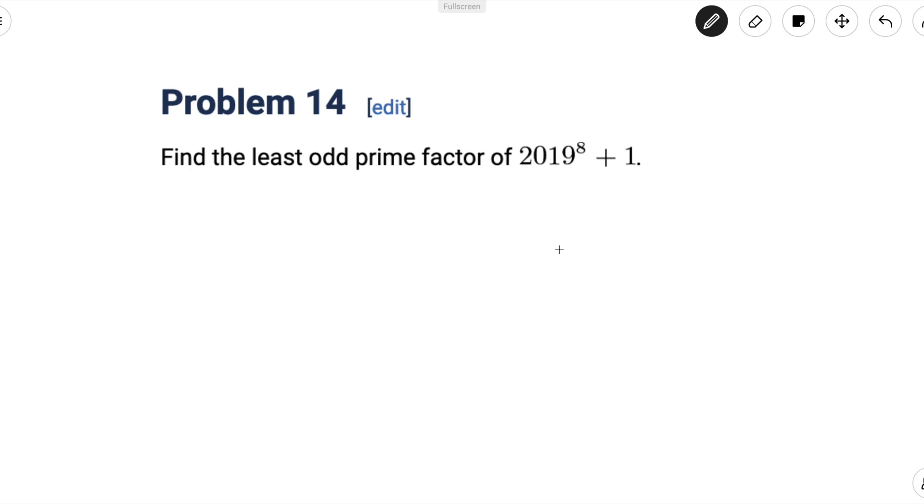In this video, we're going to be working with mods because it's just way easier to see. So let's say the prime in question is p. This means that 2019 to the 8 plus 1 is divisible by p. Or we could say that 2019 to the 8 plus 1 is congruent to 0 mod p.